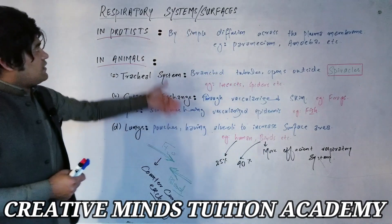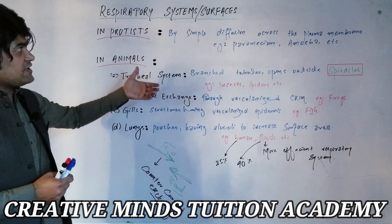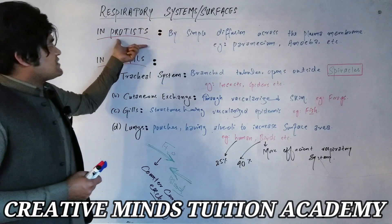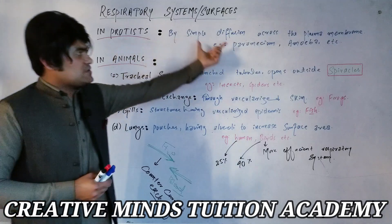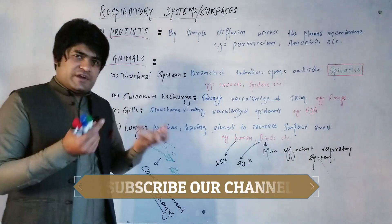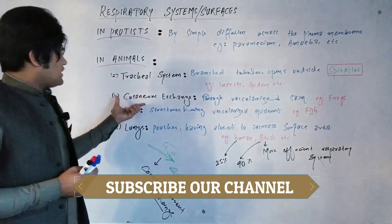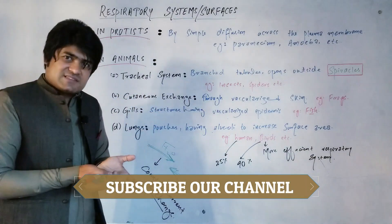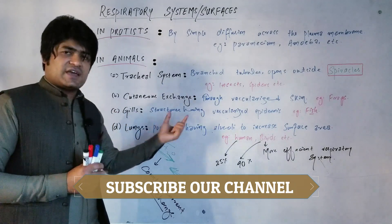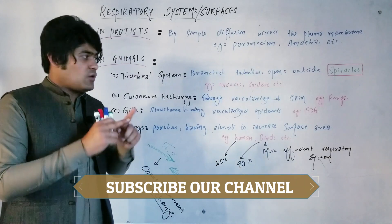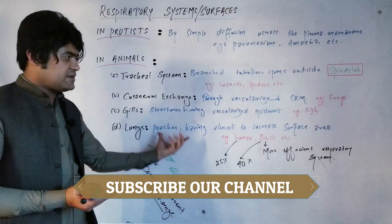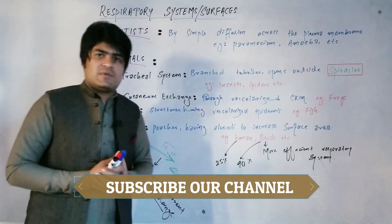This is a simple overview of respiratory systems and respiratory surfaces, including simple diffusion through the body surface, the tracheal system, cutaneous exchange through the skin, and the gill system. This is all about today's lecture.